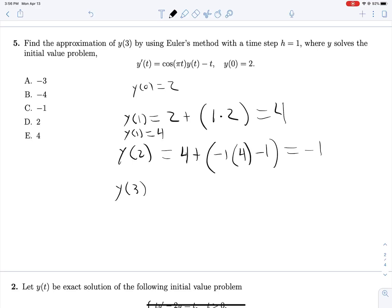And finally, y at 3 is negative 1 plus, y at 2 is negative 1, negative 1 plus 1 times the cosine of 2 pi, so 1 times y, which is negative 1, minus t, so minus 2. And this gives us negative 4.